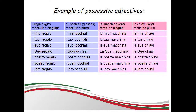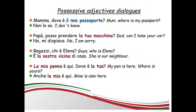Let's see some dialogues. Mamma, dov'è il mio passaporto? — Mamma, where is my passport? — Non lo so. — I don't know. Papà, posso prendere la tua macchina? — Dad, can I take your car? — No, mi dispiace. — No, I'm sorry. Ragazzi, chi è Elena? — Guys, who is Elena? — È la nostra vicina di casa. — She is our neighbor. La mia penna è qui. Dov'è la tua? — My pen is here. Where is yours? — Anche la mia è qui. — Mine is also here.